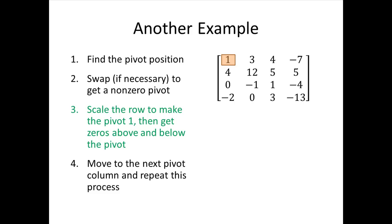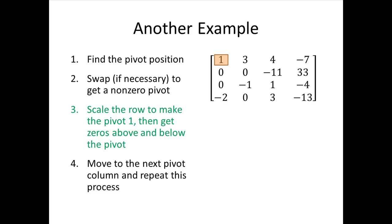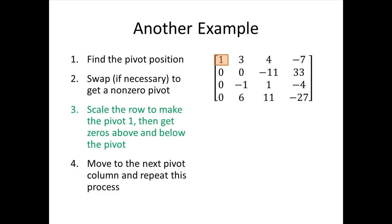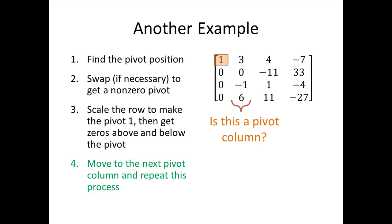Now we need zeros above and below the pivot. There's nothing above our pivot, so we just need zeros below. Using the replacement operation, we multiply row one by negative four and add it to row two. We also multiply row one by two and add it to row four. Column one is now set — we have our pivot of one, with zeros above and below. We're ready to move on to the next pivot column.